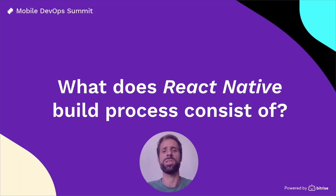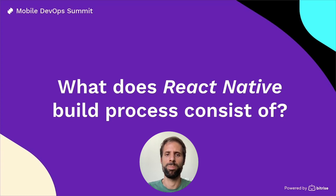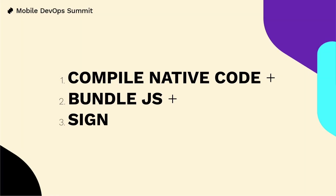As we could see in the previous slides, React Native involves JS code that needs to be bundled at some point. This adds a build phase to the normal native build process. We can think of React Native builds in three different phases: first, it compiles the native code; then, it bundles the JS code; and finally, it signs the resulting artifact.